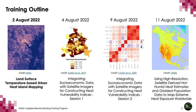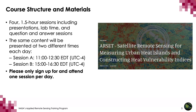The final part of the training will present how to use high-resolution satellite-derived heat estimates and gridded population data to map extreme heat exposure worldwide. There will be hands-on exercises in parts one and three for you to work with satellite imagery and learn how to construct your own heat vulnerability indices. Each of the four parts will be one and a half hours in duration, including presentations, lab time in parts one and three, and question and answer sessions. The same content will be presented at two different times each day — please only sign up for and attend one session per day.